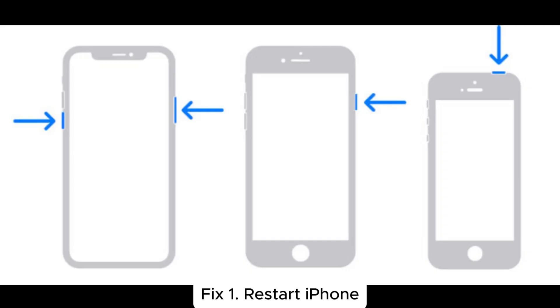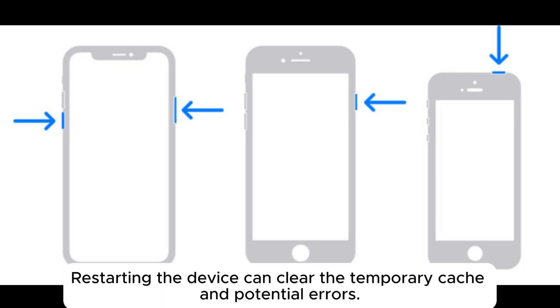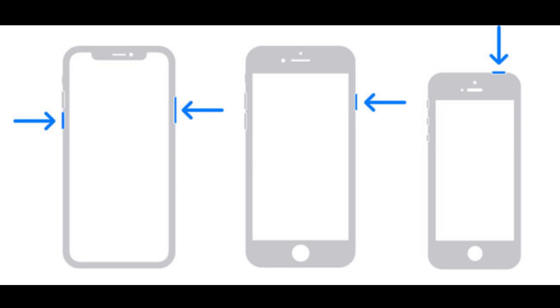Here are some fixes to help you resolve the issue of iPhone photos blank and camera roll. Fix 1: Restart iPhone. After prolonged use, an iPhone may accumulate a temporary cache, which can lead to brief system glitches, such as iPhone images showing up as black or blank. Restarting the device can clear the temporary cache and potential errors.